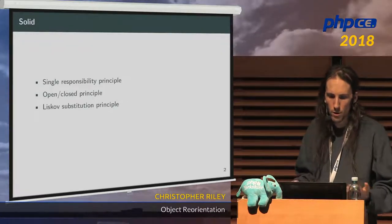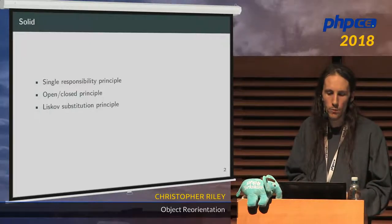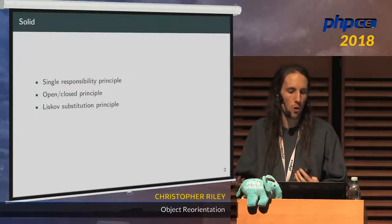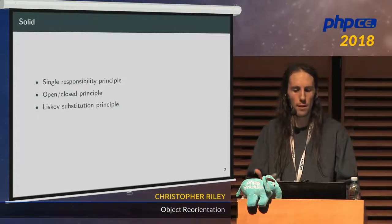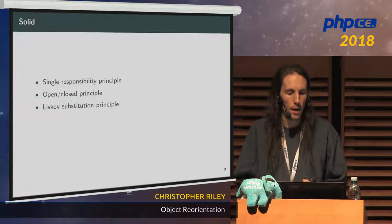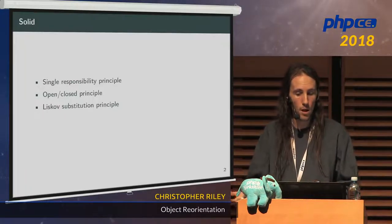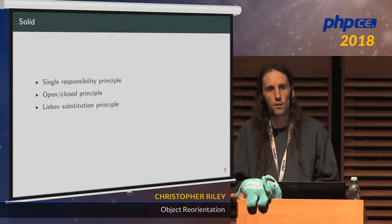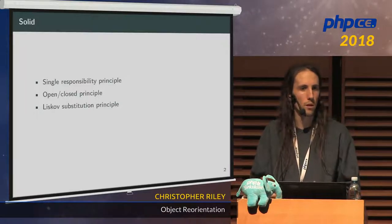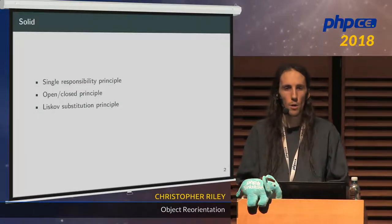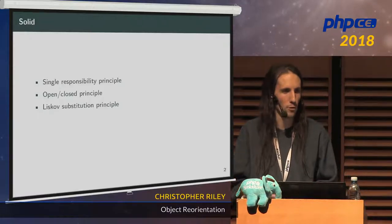The L in SOLID is the Liskov Substitution Principle. It's the principle that allows us to substitute one implementation of an interface for another, and you should be able to do so without affecting the correctness of your program. For example, if you switch out a database implementation from MySQL to Postgres, the method should still do the same thing — you wouldn't call a delete method and expect it to update something in the Postgres version.